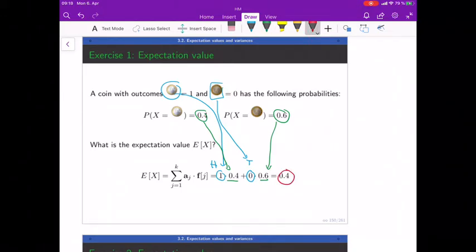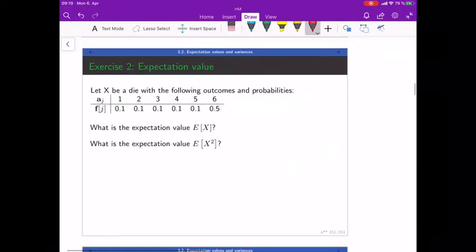Brilliant! Let's try another example, a bit more complicated. Now it's a die, six outcomes, and those are the probabilities. You can see the six is very likely with 50 percent. What is the expectation value of this random variable E[X]? When you've done this, try to calculate the expectation value of X squared.